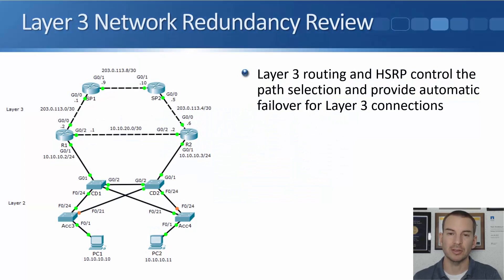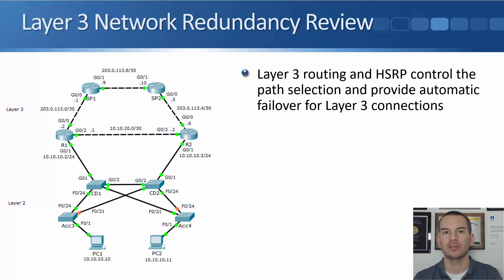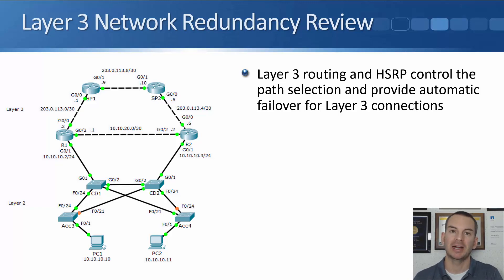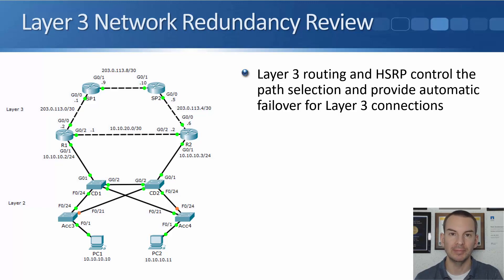In this section we're going to focus on Spanning Tree, which is a Layer 2 technology that prevents loops across your Layer 2 switched network. But before we get into that, I want to do a review of how network redundancy, path selection, and loop prevention works at Layer 3.